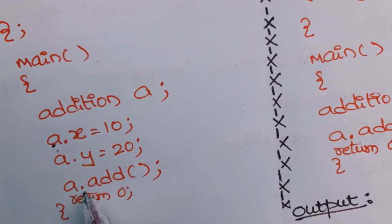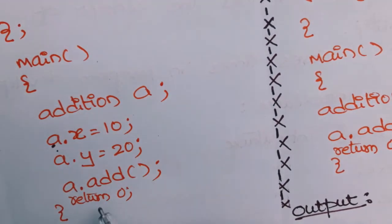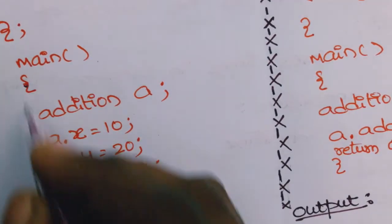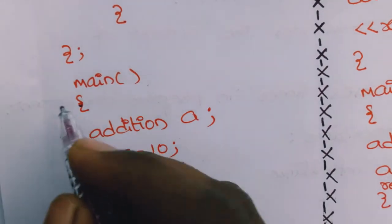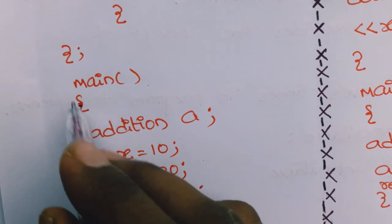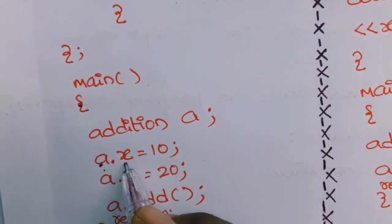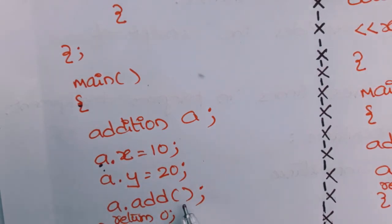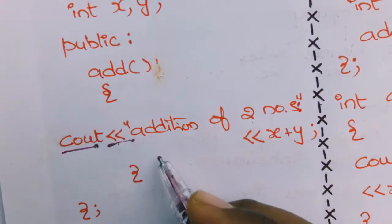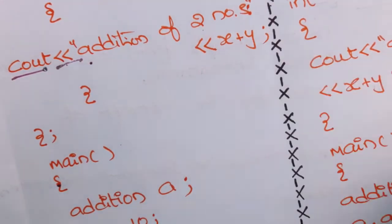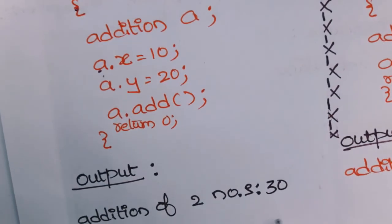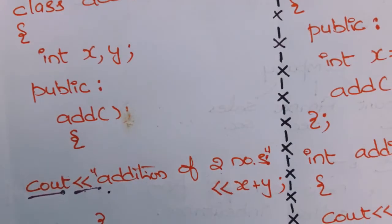Next, using this object you call the function: a.add(). The main function ends with return 0. When you execute this program, execution starts with main. The object assigns x = 10 and y = 20, then calls the add function, which prints 'Addition of two numbers is' followed by x + y, which equals 30.